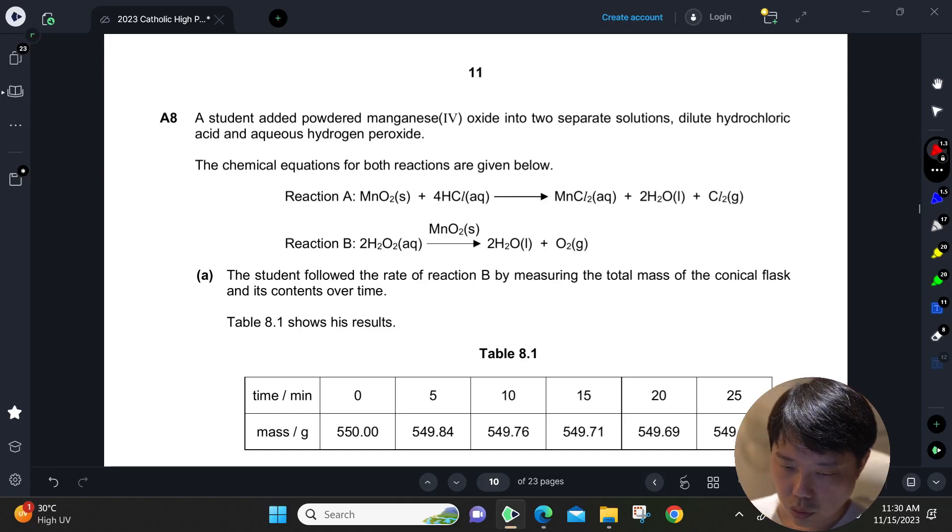A student added powdered manganese oxide into two separate solutions: dilute HCl and dilute H2O2. The chemical equations are given. For Reaction A, it's a redox reaction where you have chloride getting oxidized to chlorine gas. For Reaction B, it is...